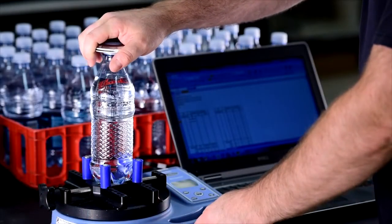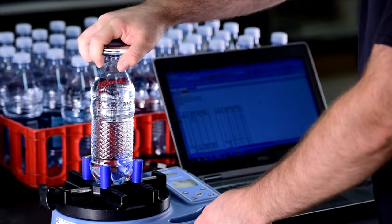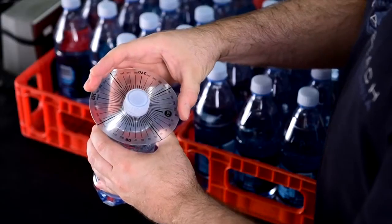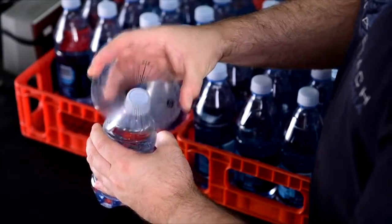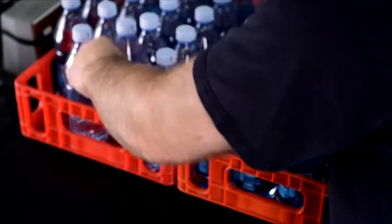Quality checks on bottle caps include removal torque and application angle to ensure ease of removal and seal integrity. In a true production environment, each of these steps happens in a small fraction of a second and the total time from when a bottle enters the capper to when it exits with the cap applied can be around a half second.